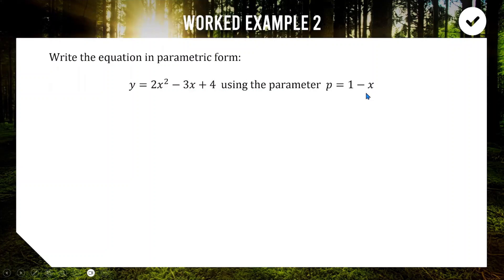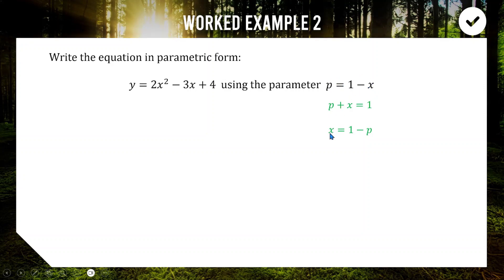Now we'll do an example where we go in reverse. We have a singular Cartesian equation for a parabola relating x and y. We're going to try and write this as two separate parametric equations where our parameter is p, which is equal to one minus x. We're going to rearrange one of the equations and then substitute it into the other. If p equals one minus x, we rearrange to get p plus x equals one, so x equals one minus p. We've rearranged to make x the subject, and now we substitute this expression for x into our equation for y.